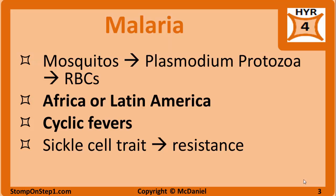Malaria is a disease caused by the Plasmodium protozoa that is transmitted by mosquitoes. The most common species are Plasmodium falciparum, Plasmodium vivax, Plasmodium ovale, and Plasmodium malariae. Each of these has slightly different characteristics, but for the most part these differences are beyond the scope of Step 1.